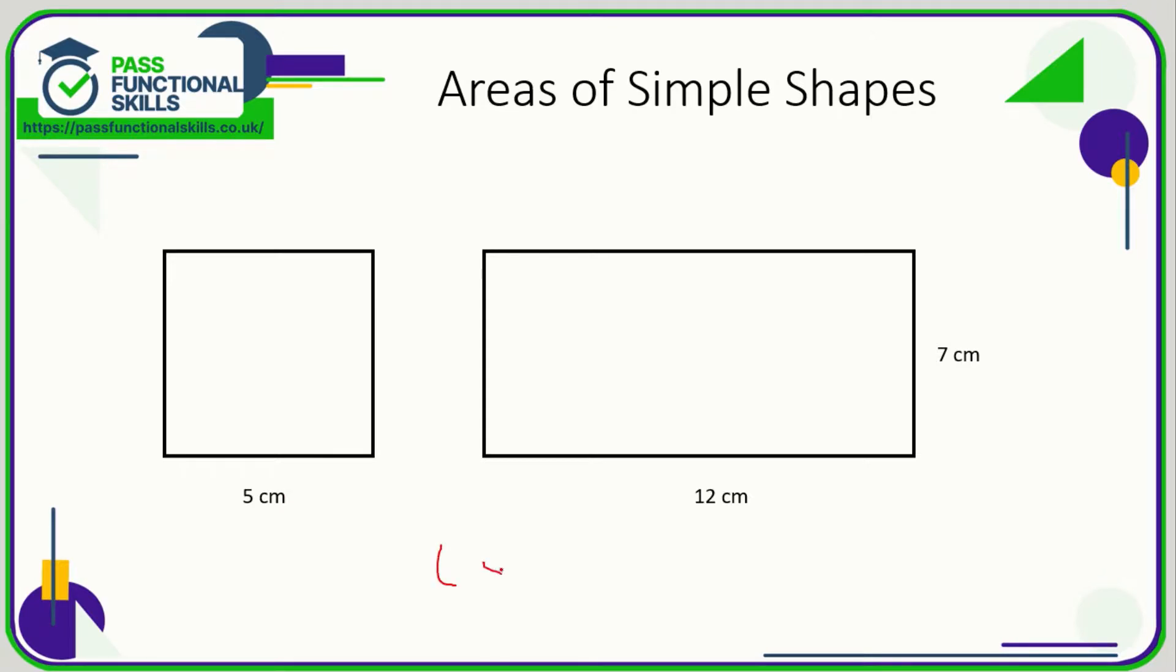The formula for the area of a square and a rectangle is the length times the width. If on a square you've only been given one side, don't worry because the other side is identical. So the area of a square 5 by 5 is simply 25, and the unit is square centimeters, not centimeters.